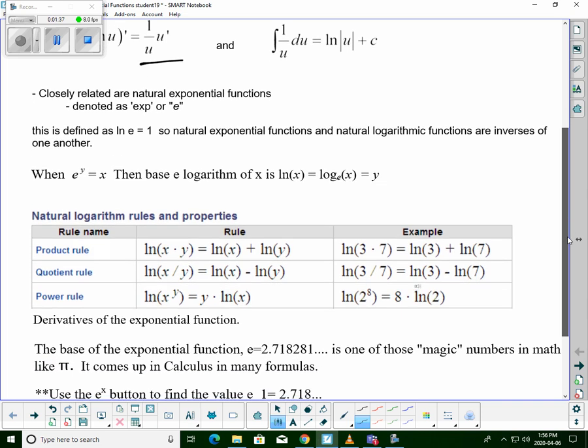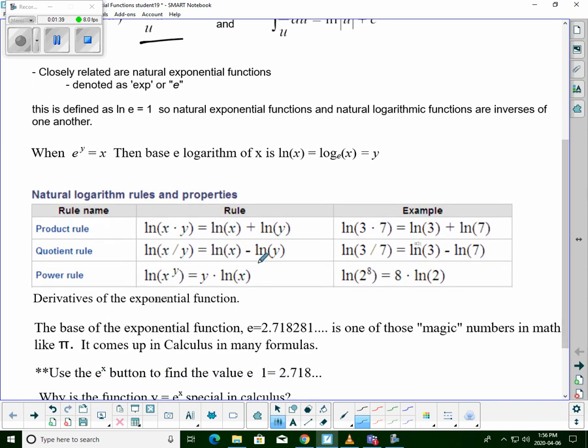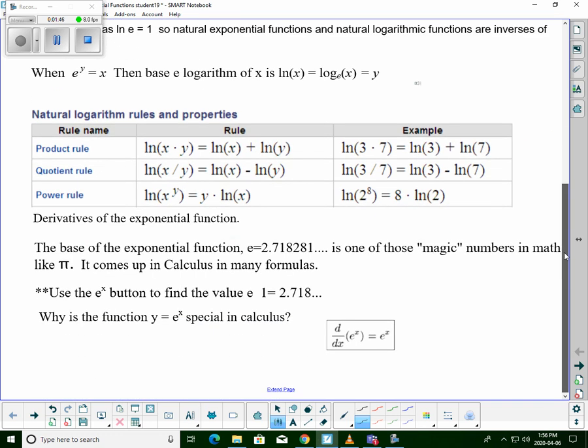Now, our natural log properties are just like our logarithm properties for pre-calc 30, where if we're multiplying, it's adding, and if we're dividing, we're subtracting, and then we have an exponent that comes out in front. Just like the log laws in pre-calc 30.